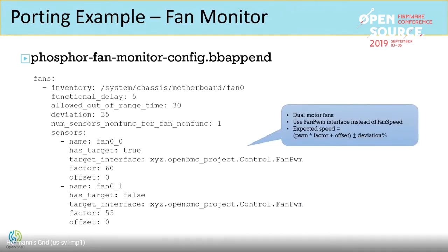Fan monitor checks whether fan speed is within the expected range. We specify attributes: if the fan has a target, the service will monitor it; if not, the service ignores that fan speed. If we set a PWM to 100, the expected speed is the PWM multiplied by the factor attribute plus the offset attribute. We have a deviation — if speed varies a little that's okay, but if it deviates too much, we treat the fan as non-functional.